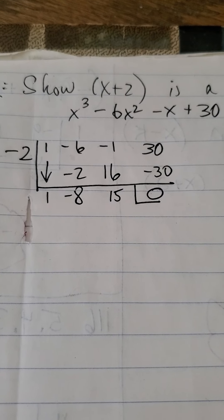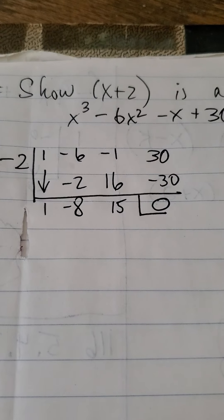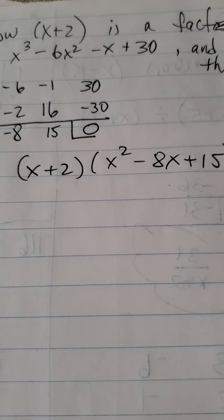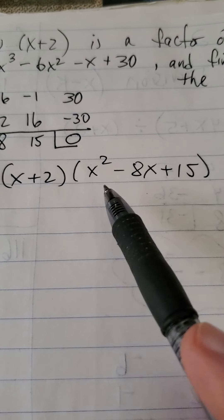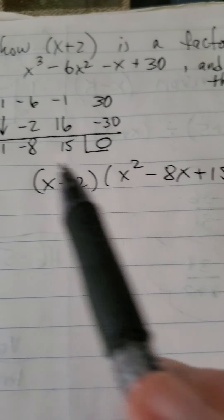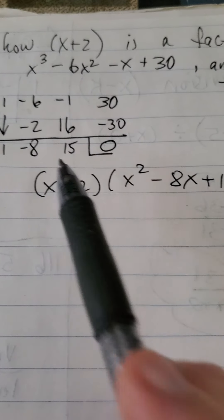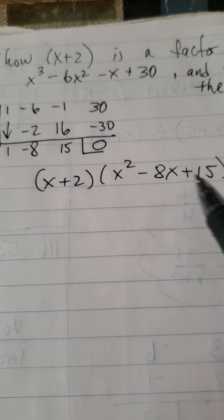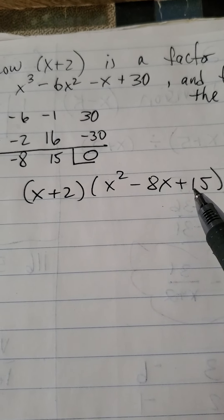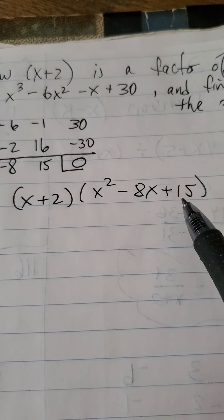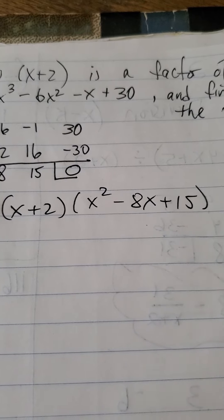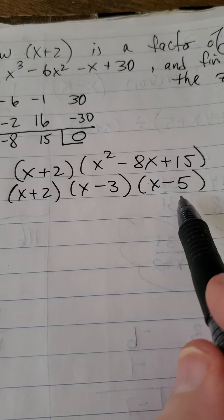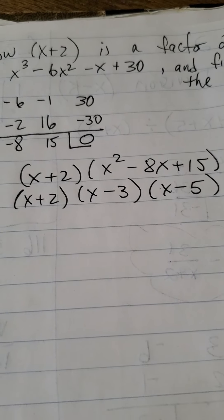So therefore, x plus 2 is a factor, which means that my original third degree polynomial can be written as x plus 2 times this quadratic. Where did I get this quadratic from? From the 1, the negative 8, and the 15. Now, this quadratic I could factor just by factoring a quadratic. I want two numbers that multiply to positive 15 and add up to negative 8.